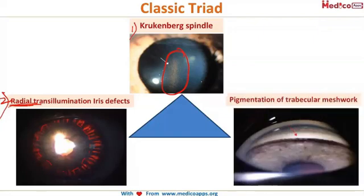The third feature is pigmentation of the trabecular meshwork. As you can see, the trabecular meshwork appears dark brown in color due to the deposition of iris pigment.